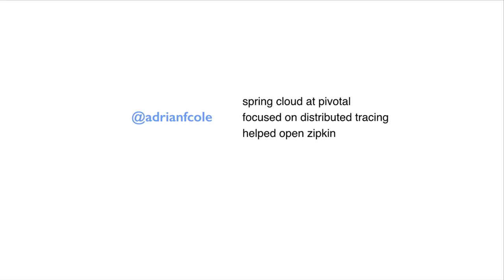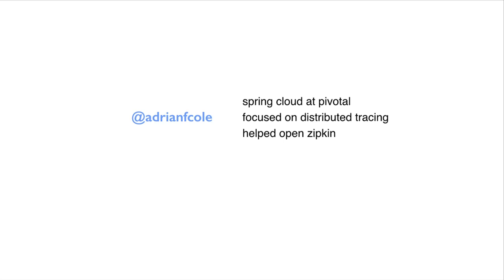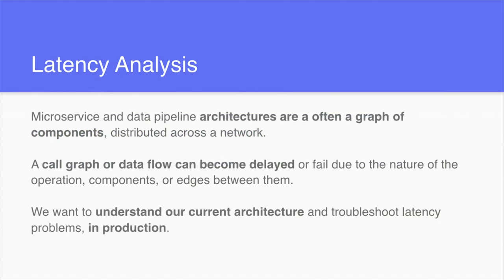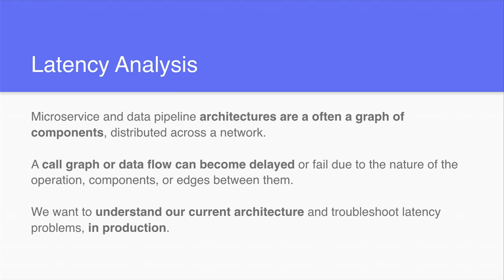This is more about the problem space. The first thing I'm going to go into is latency analysis, which is what people think they're using distributed tracing for. Latency is a product problem — if you have increasing latency that users are aware of, they're less likely to continue using your service. Analysis of why something took too long becomes an important trick to have in your toolbox.